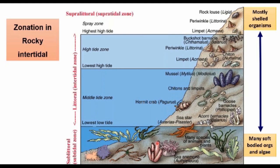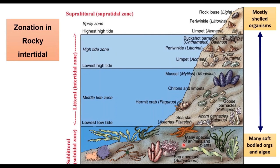One low tide to high tide cycle takes 6 hours and 25 minutes, so these organisms cannot withstand nearly 3 to 6 hours of exposure duration. Plants, brittle stars, sea urchins, sea anemones, and other animals are mostly accumulated in the low tidal zone.